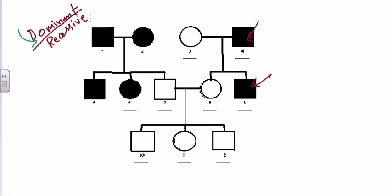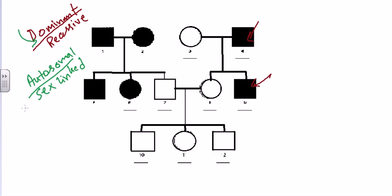Once we establish it is dominant, we need to determine whether it is autosomal dominant or sex-linked dominant. The distribution of the disease appears almost equally in males and females, so we can't rule out either type by observation alone. We proceed with genotypic analysis, starting with the sex-linked assumption. For sex-linked dominant, affected individuals receive the dominant allele on the X chromosome.